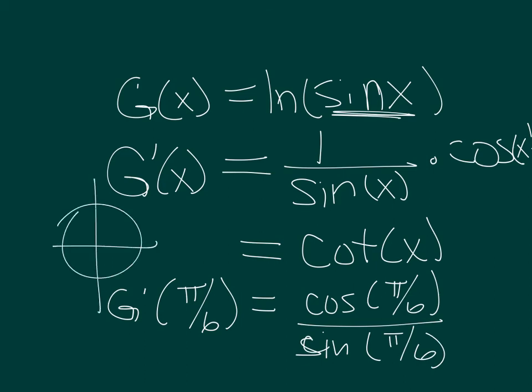So on my unit circle, pi over 6 is this first one, this first point, and that point is square root of 3 over 2, comma, 1 half.